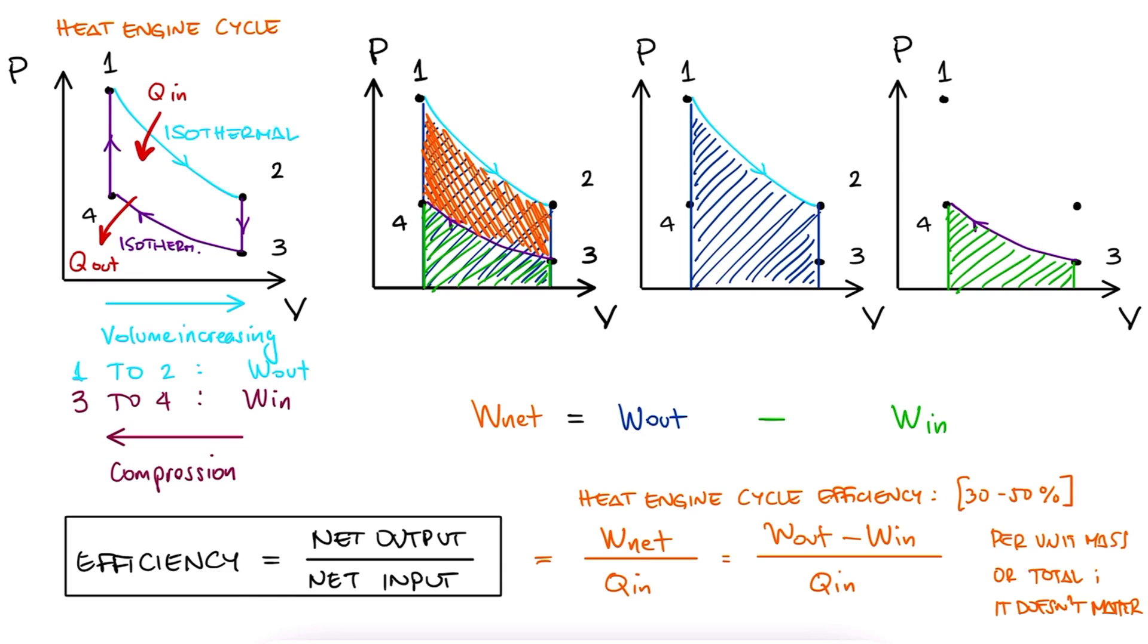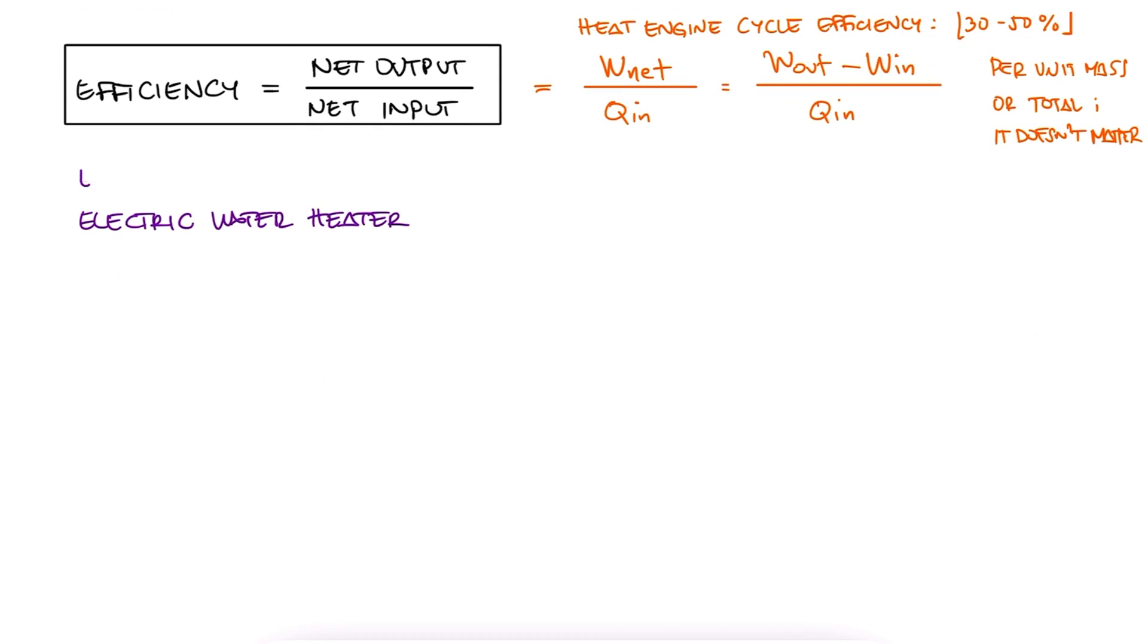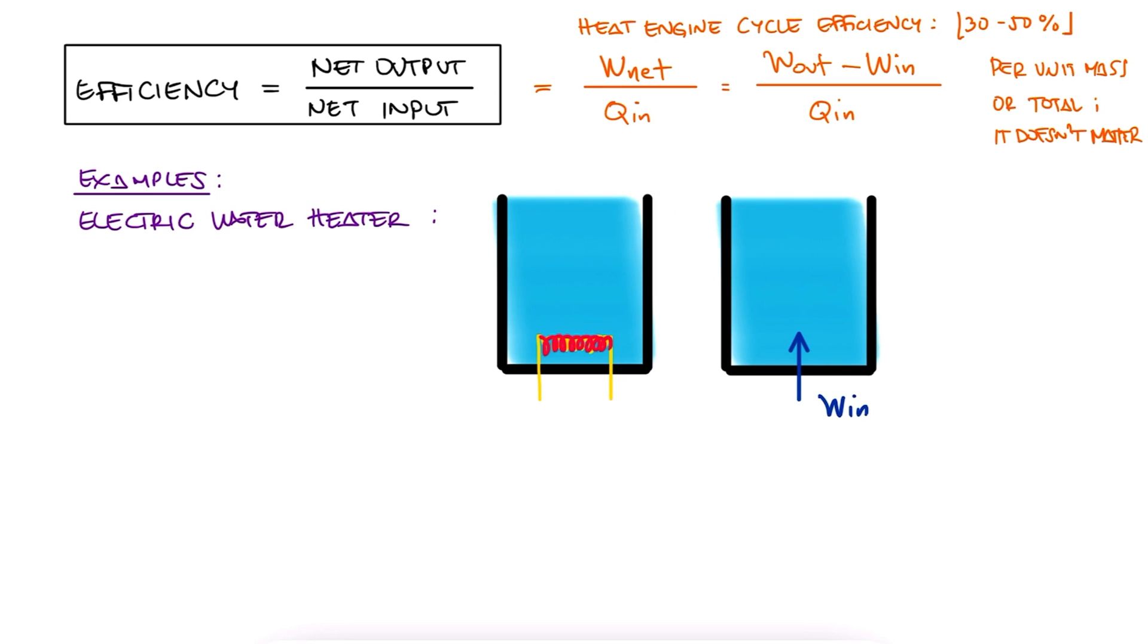Of course, the definition of the efficiency will vary depending on the application. For an electric water heater, you're putting electric energy in, and you want the water to rise in temperature. Therefore, eta would be the change in internal energy, the actual heat coming into the water to make it hotter, over electrical energy.